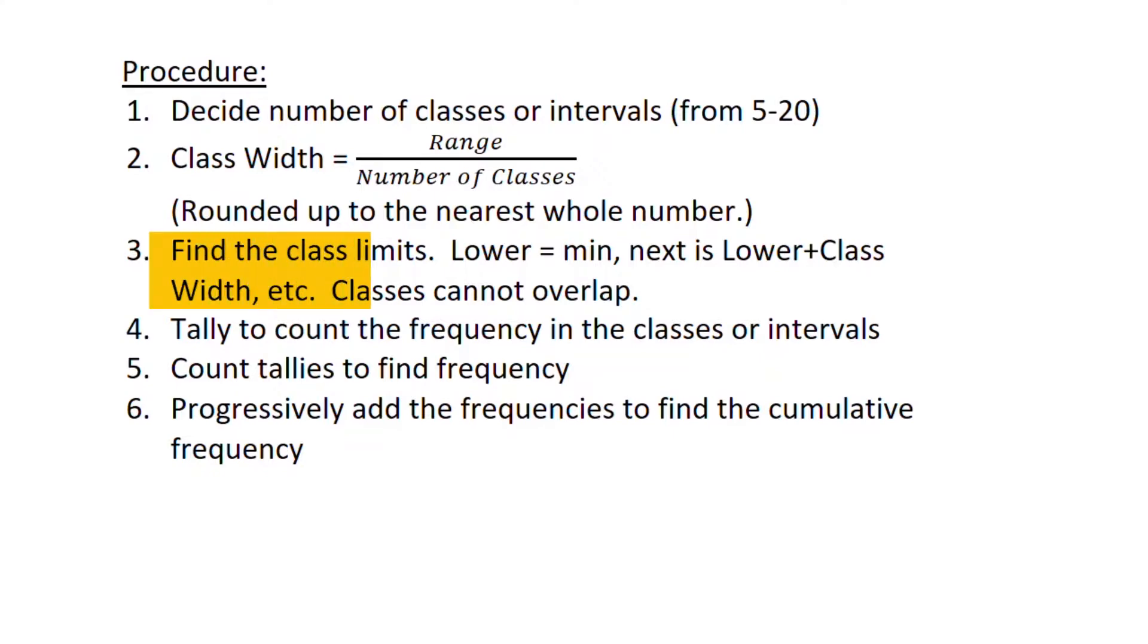Find your class limit. So start with the lower, then the next, and it goes up to the lower one plus the class width, et cetera. You cannot overlap classes. Then you want to count the frequency of values in that interval or class. Count the tallies. That'll tell you the frequency. And often you'll want to see the cumulative frequency. So number six is an extra step if you want to see the cumulative frequency. Let's do an example.